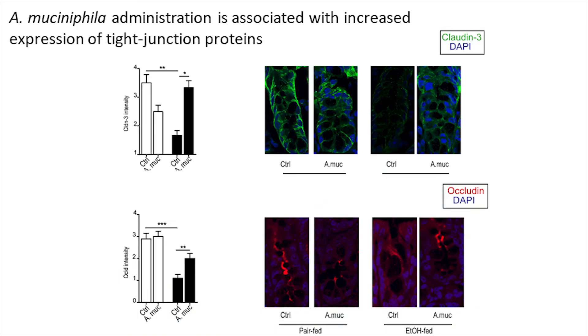We could demonstrate that administration of Akkermansia improves mucus thickness, it increased the number of goblet cells, it increased the expression of Occludin and Claudin-3, and it also decreased systemic endotoxin levels. So obviously it was able to improve the intestinal epithelial barrier.